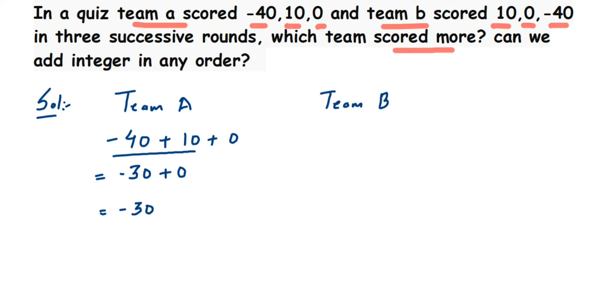Next is team B. Team B's score is 10 + 0 + (-40). First I'm going to add the first two integers, so 10 plus 0 is 10. Then 10 plus -40. 10 and 40 have different signs - 40 has a negative sign, 10 is positive. Different signs means subtract them, so 40 minus 10 is 30. But 40 is the greater number with a negative sign, so we get -30. You can notice both teams got the same score: -30.